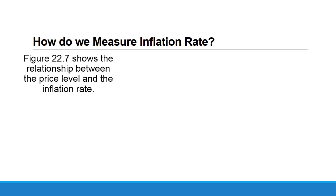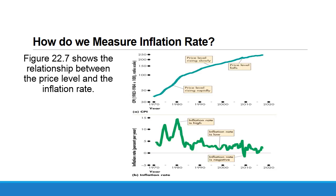In this figure we show the relationship between the price level and the inflation rate. When the price level is rising rapidly, the inflation rate is high. When the price level is rising slowly, the inflation rate is low. And when the price level falls, the inflation rate is negative, which indicates deflation.